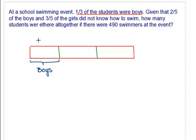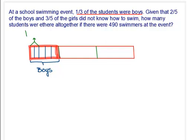We divide the boys' portion into 5 equal parts. 2 out of 5 of those parts represent boys who don't swim. The remaining 3 parts of the boys' section are swimmers. For the girls, we also need to divide their section into 5 parts to apply the 3/5 fraction.